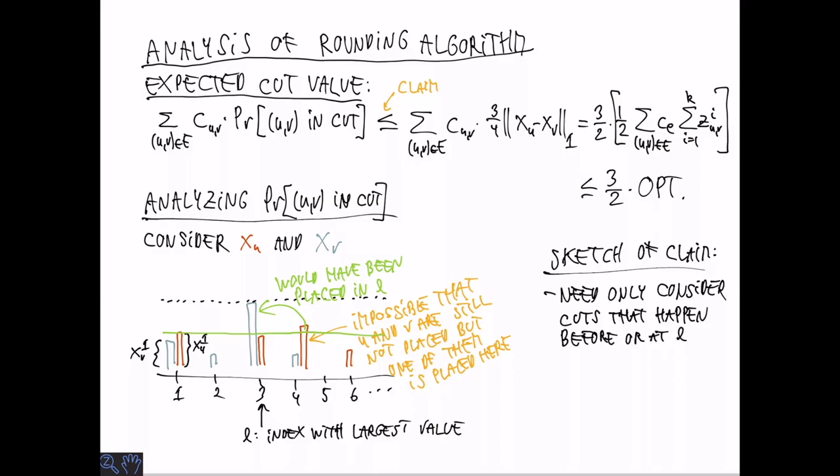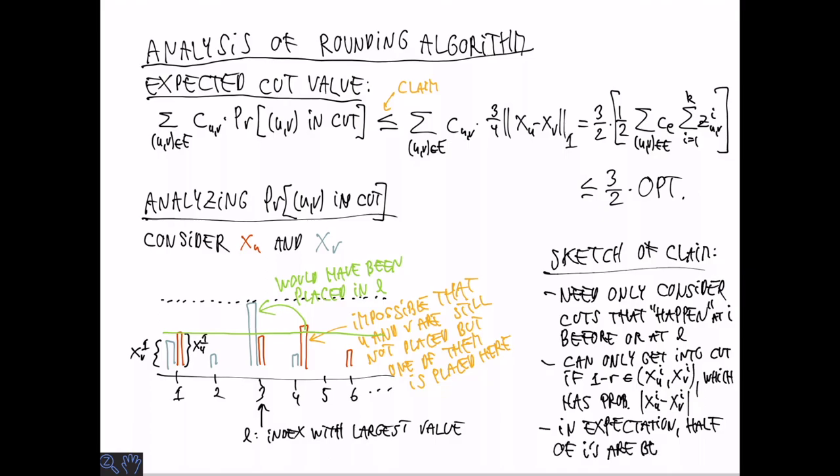When we try to prove the claim, we only need to consider the cuts that happen before L or at L. We notice that we can only get into the cut if 1-r is in this interval between xUi and xVi for some i. This has probability over the choice of r that is the absolute value of the difference of xUi and xVi. In expectation, half of the i's are going to be before L because we have a random permutation. These are the main ingredients of the claim. Please see the book for details.